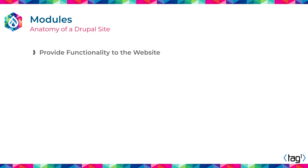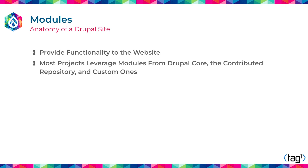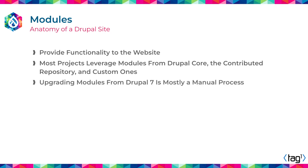Most projects will include a combination of Drupal core modules, contributed modules, and custom modules. If you are coming from Drupal 7, it is going to be mostly a manual process to upgrade the code itself to Drupal 10, because the underlying API is very different. We went from procedural code to object-oriented code. We are now adopting Symfony components — it is very, very different.